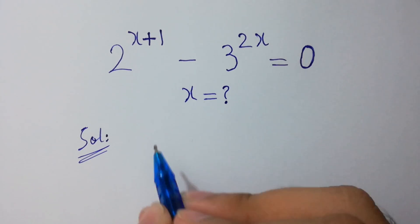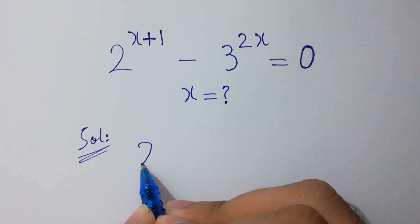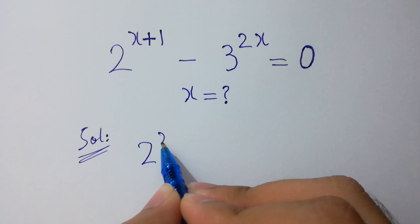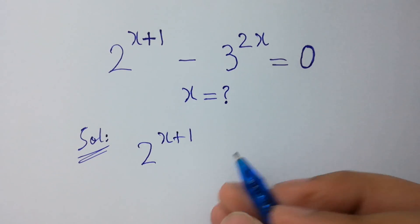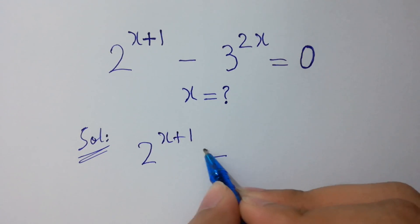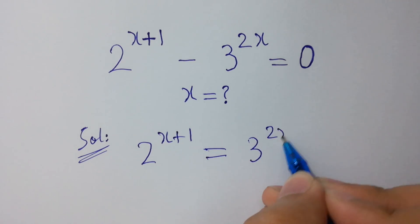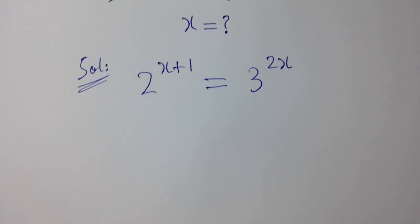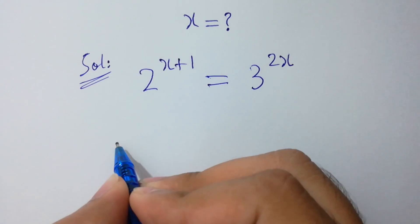Now take 2 to the power x plus 1 equals 3 to the power 2x. Now take log on both sides.